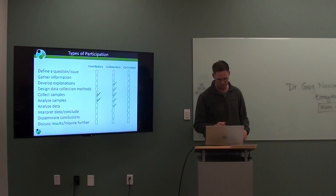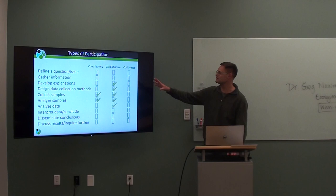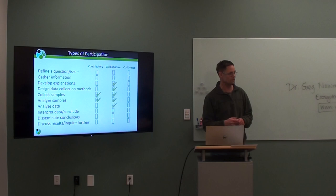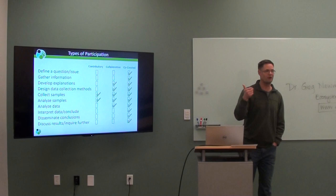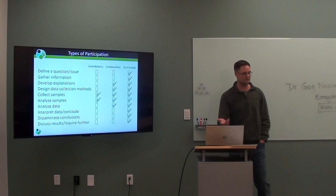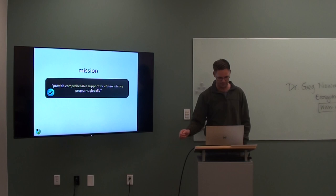Zooniverse also uses ship logs — ten people transcribe handwriting, and the weight of evidence determines what the log said. In a collaborative project, volunteers are involved in a greater degree of the process. In a co-created project, they're setting out to ask their own research questions — like in Flint, Michigan, where community members came up with the question 'what's wrong with our water?' and gathered evidence and stakeholders to answer it.